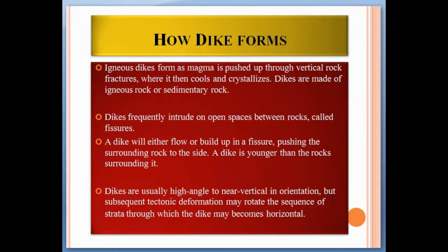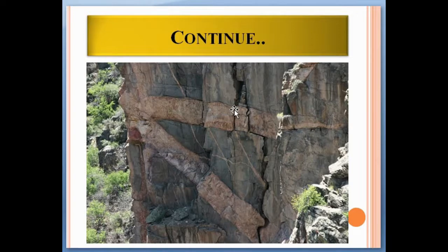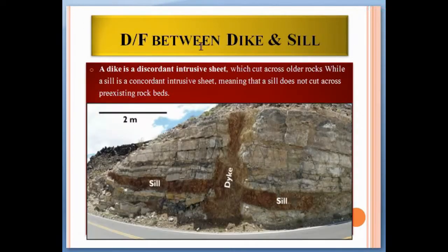Dikes are usually high-angle to near-vertical in orientation, but subsequent tectonic deformation may rotate the sequence of strata, through which the dike may become horizontal. As seen here, this dike became horizontal due to tectonic activity. Dikes form when magma is pushed into fissures or crack zones in pre-existent rock.